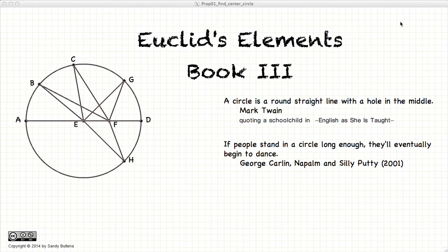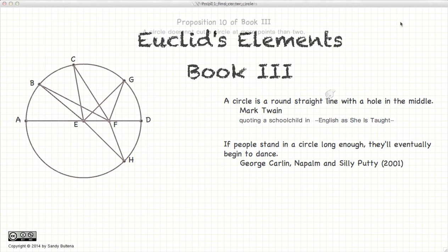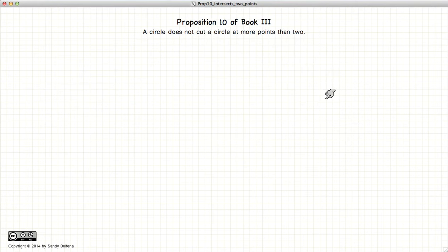Hi! Welcome to my tutorials on Euclid's Elements Book 3. This video presentation is on Proposition 10 of Book 3, which states that two circles cannot cut each other at more than two points.